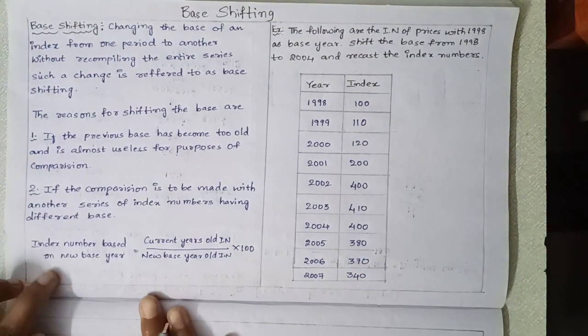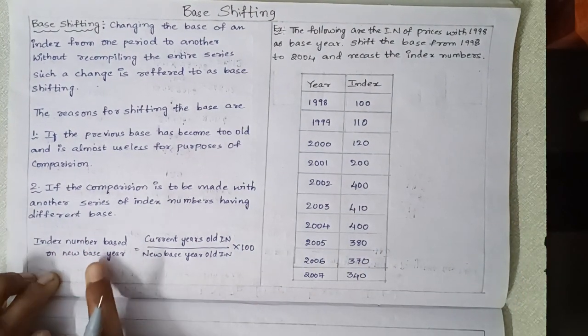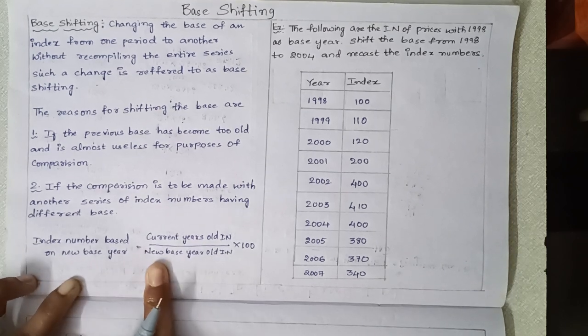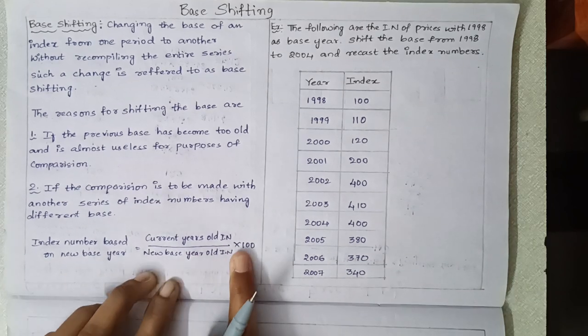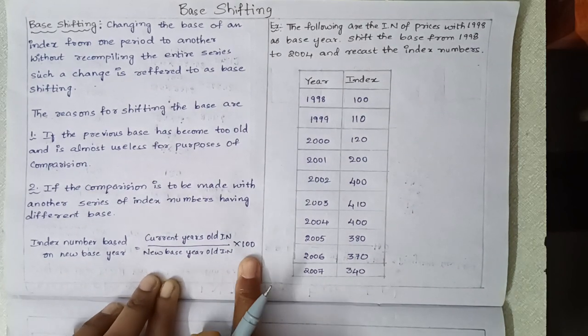This is the formula. Index number based on new base year equals current year's old index number divided by new base year old index number into 100.